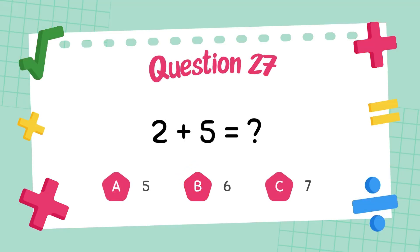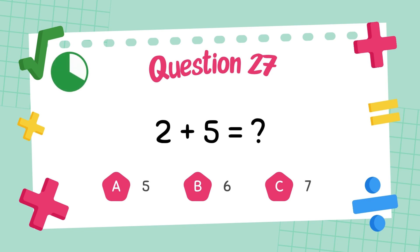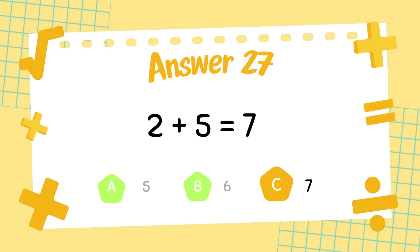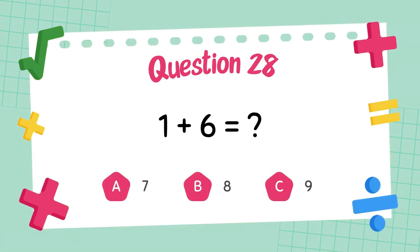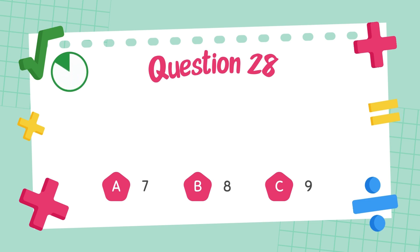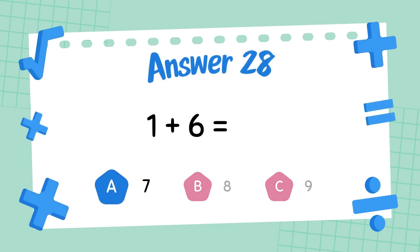What is 2 plus 5? The answer is 5. What is 2 plus 5? The answer is 7. What is 2 plus 6? The answer is 7.